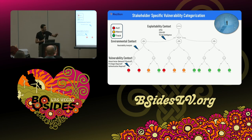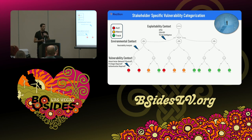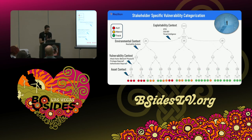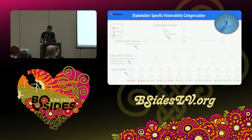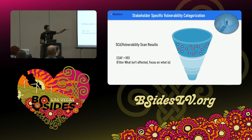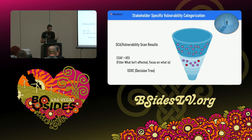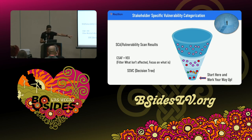If you can only deal with 10% of vulnerabilities, make sure it's the 10% that matters most. The framework is flexible — if you don't have asset criticality data, remove that layer. If you have a product that can tell you whether code is loaded via reachability analysis, add that layer. You can look at this as a funnel: start with scanner output, apply CSAF/VEX to filter what's affected, then run the decision tree with all this context, and work from the bottom up on what provides the most risk reduction.